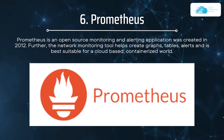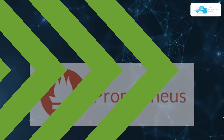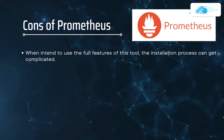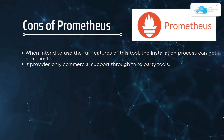Number six on our list is Prometheus. Prometheus is an open source monitoring and alerting application created in 2012. It helps create graphs, tables, and alerts and is best suited for a cloud-based, containerized world. It follows a dimensional data model, uses a built-in expression browser and third-party plugins, and is compatible with Linux, macOS, and FreeBSD. The cons are that using the full feature set makes the installation process complicated, and it provides only commercial support through third-party tools.